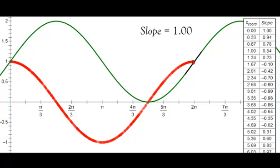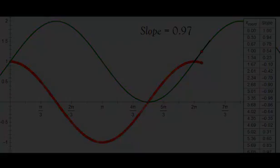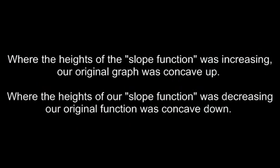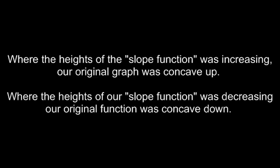Once again, positive slopes, my height values are positive, and they were getting more positive. So where the heights of our slope function was increasing, our graph was concave up, and the heights of our slope function was decreasing, our original function was concave down.